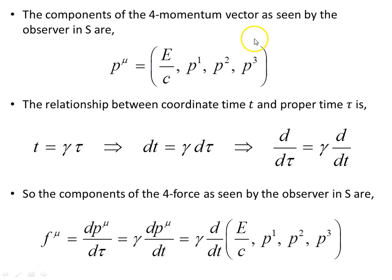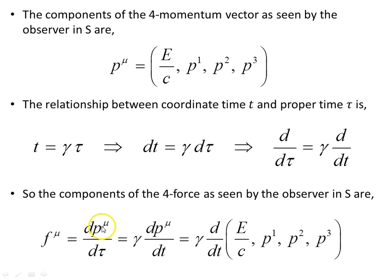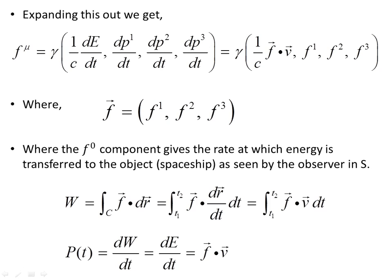The components of the four-momentum vector as seen by an observer in S have a time component (times c) and three spatial components. The relationship between coordinate time and proper time tau is t = γτ, so dt = γdτ, which gives us the derivative operators. The components of the four-force as seen by observer in S are dp^ν/dτ = γ dp^ν/dt — replacing using that relationship — which is γ times d/dt of the momentum 4-vector as seen by the observer in S.